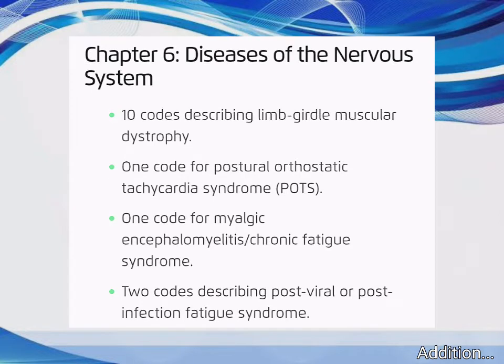Chapter 6 – Diseases of the Nervous System: 10 codes describing Limb-Girdle Muscular Dystrophy, 1 code for Postural Orthostatic Tachycardia Syndrome (POTS), 1 code for Myalgic Encephalomyelitis/Chronic Fatigue Syndrome, and 2 codes describing Post-Viral or Post-Infection Fatigue Syndrome.